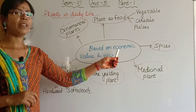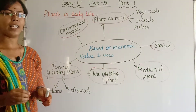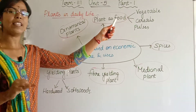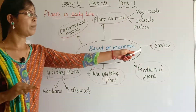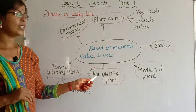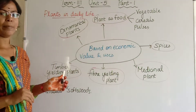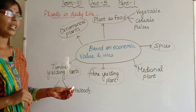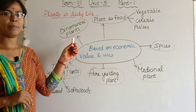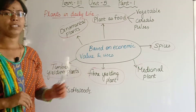Based on the economic value and uses, plants are classified as: food — vegetables, cereals and pulses; second is spices; third is medicinal plants; fourth is fiber yielding plants; fifth is timber yielding plants, that is hardwood and softwood; and the sixth is ornamental plants. Now let's see each one by one.